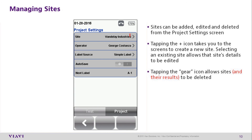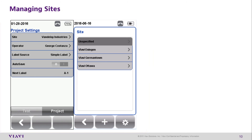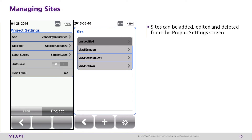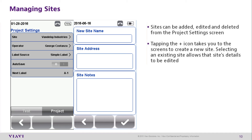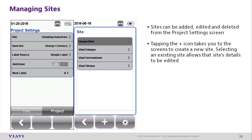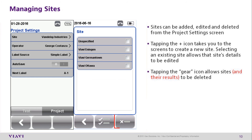Tapping the arrow next to Site under Project Settings will allow you to add, edit, or delete current sites. Pressing the plus icon will allow you to add a new site. Selecting a current site allows the site's details to be edited. Tapping the gear icon will allow you to delete sites.